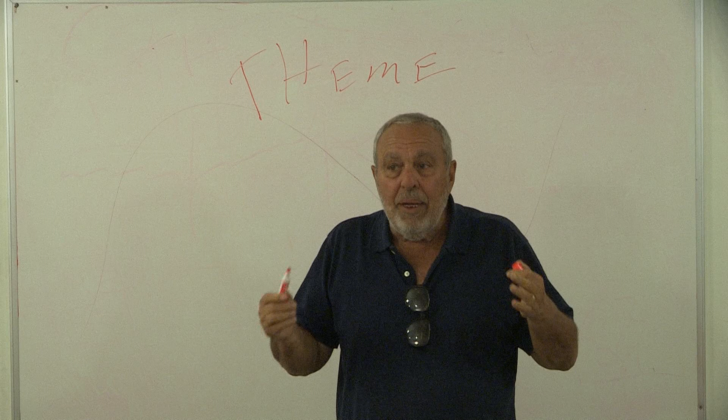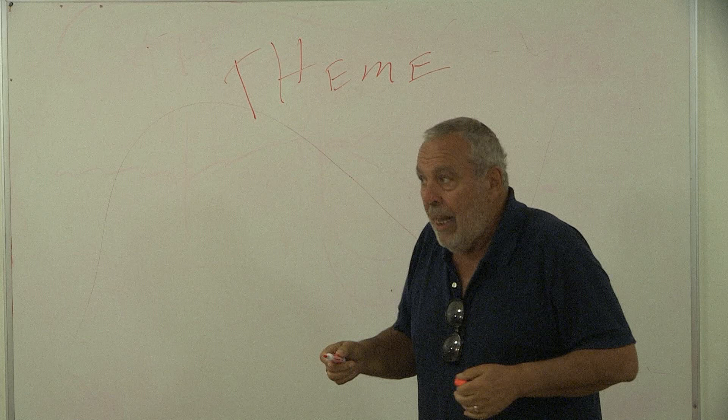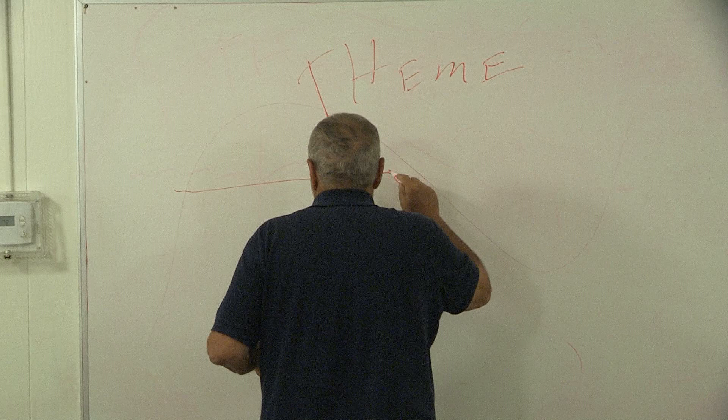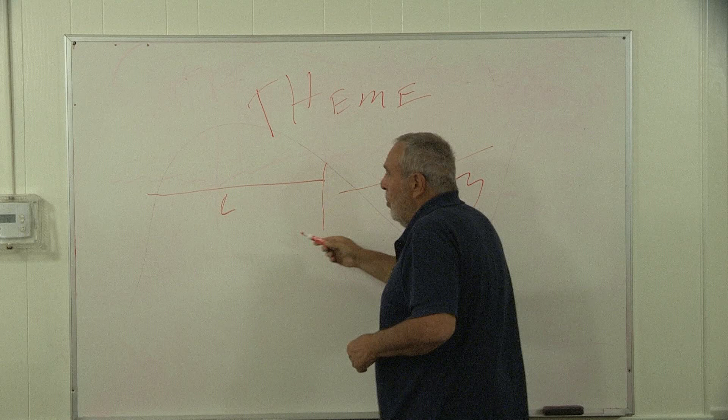Now, what emanates from the theme? Your story, your characters, your plot. Every story has how many sequences? Three. Three. Right. First act. Second act. Third act.